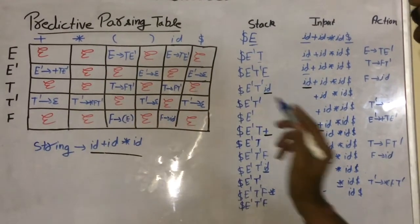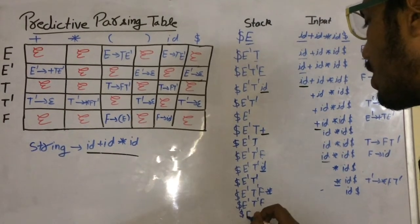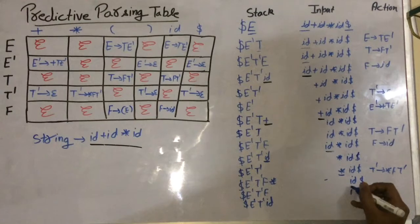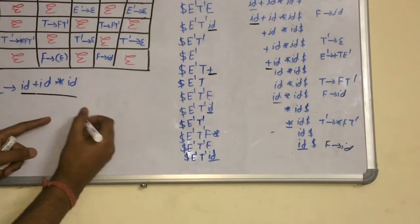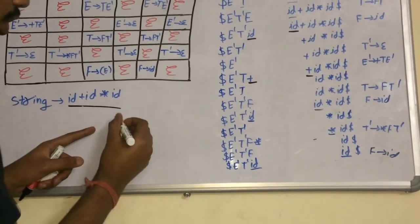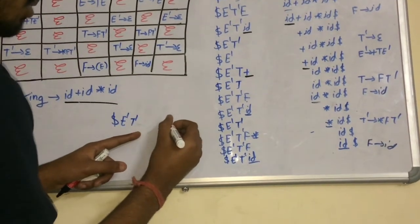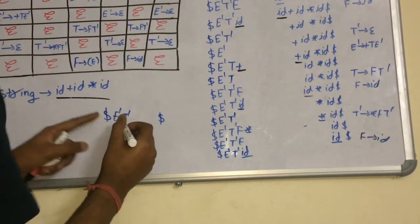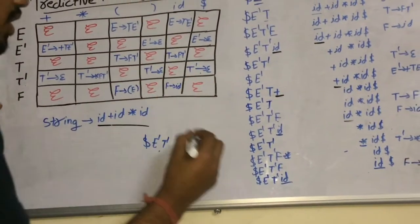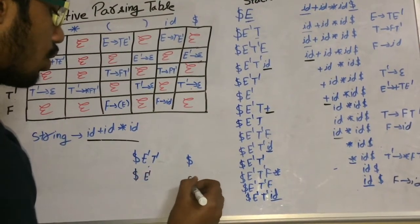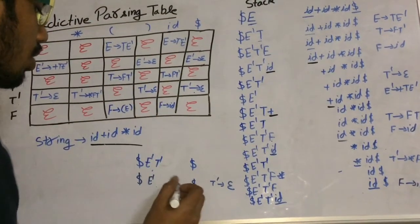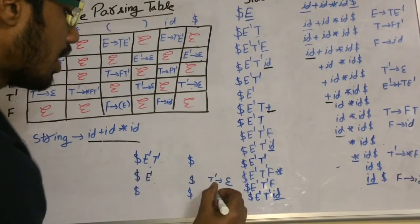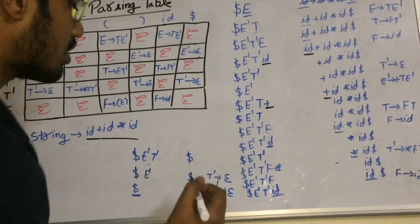Check M[F, id]: F→id. Stack: dollar E' T' id. id matches. Stack: dollar E' T'. Input: $. Check M[T', $]: T'→null. Stack: dollar E'. Check M[E', $]: E'→null. Stack: dollar. Input: dollar. Dollar matches dollar — both symbols are the same.